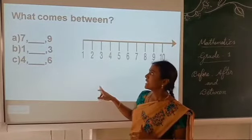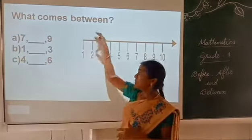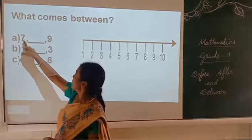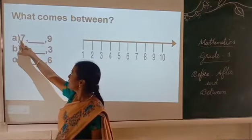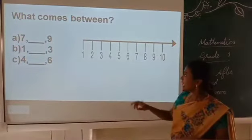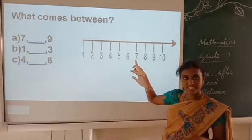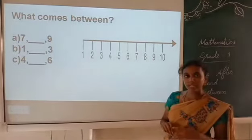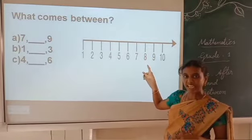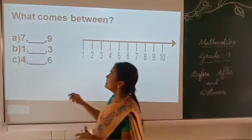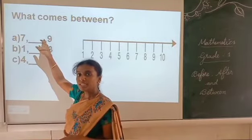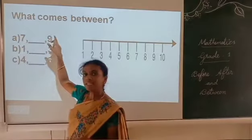Here I have given examples for between. What comes between the number 7 and 9? Here is 7 and here is 9 on the number line — 8 comes between 7 and 9.